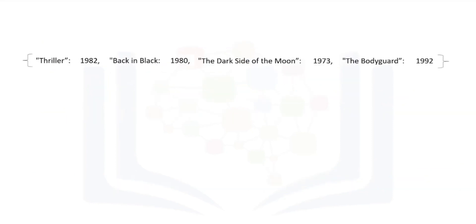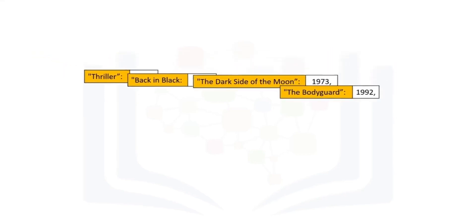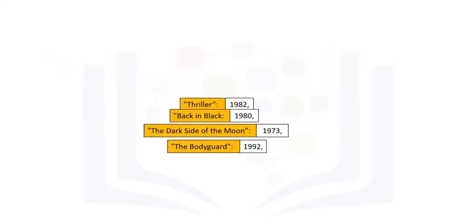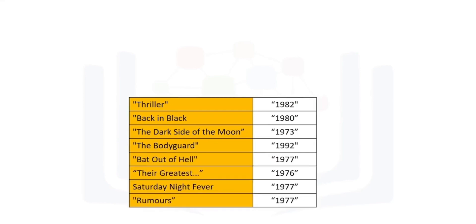Consider the following example of a dictionary. The album title is the key and the value is the release date. We can use yellow to highlight the keys and leave the values in white. It is helpful to use a table to visualize a dictionary, where the first column represents the keys and the second column represents the values. We can add a few more examples to the dictionary and also assign the dictionary to a variable.